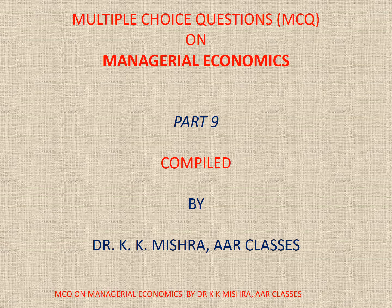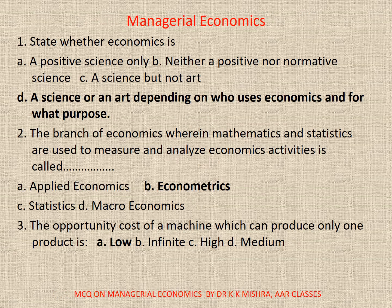Now come to the questions. Number 1: State whether economics is A. a positive science only, B. neither a positive nor normative science, C. a science but not an art, or D. a science or an art depending on who uses economics and for what purpose. The correct option is D: a science or an art depending on who uses economics and for what purpose.